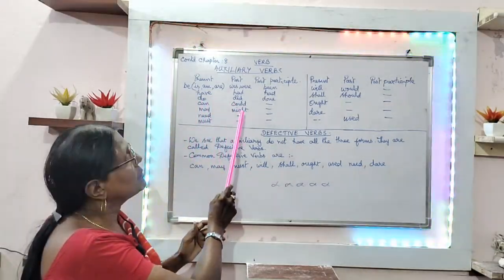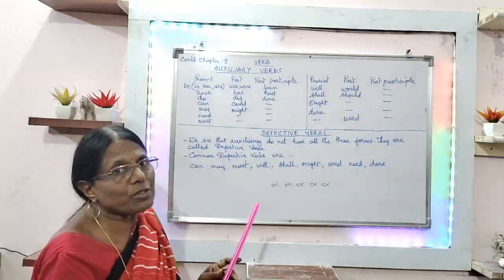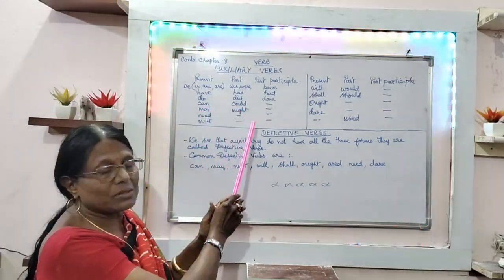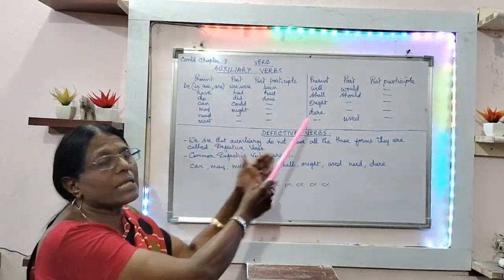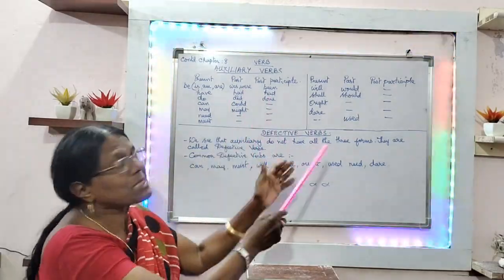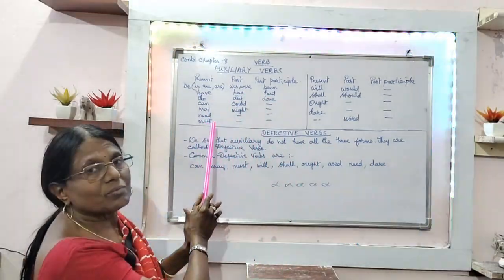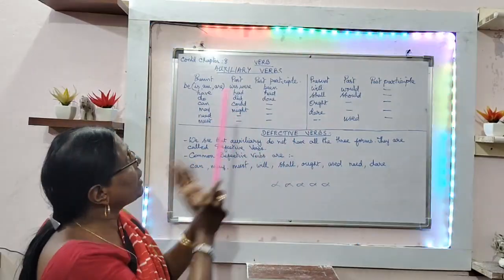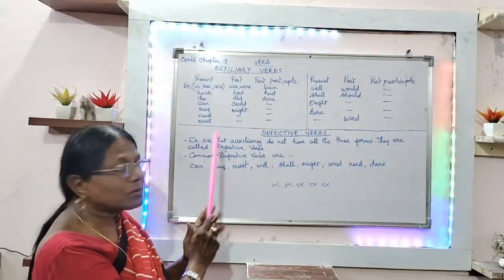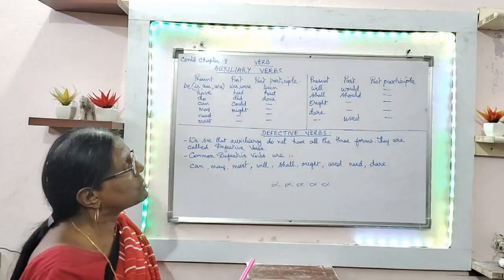'Can', 'could' — there is no past participle for this. 'May', 'might' — here also there is no past participle. 'Need' — there is no past and past participle. 'Must' — there is also no past and past participle.